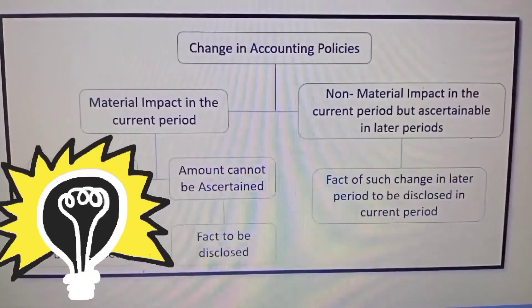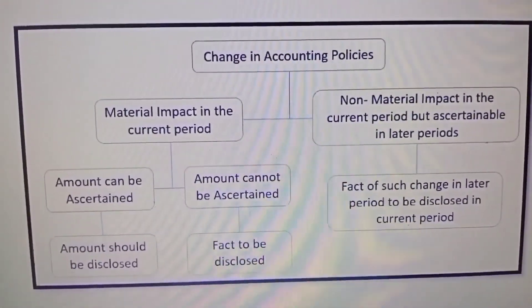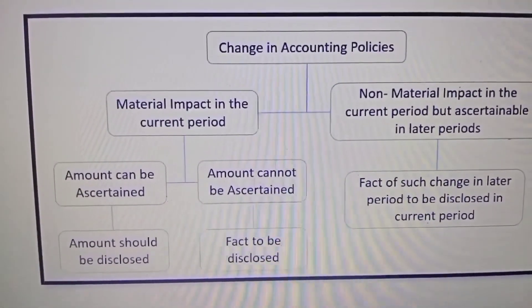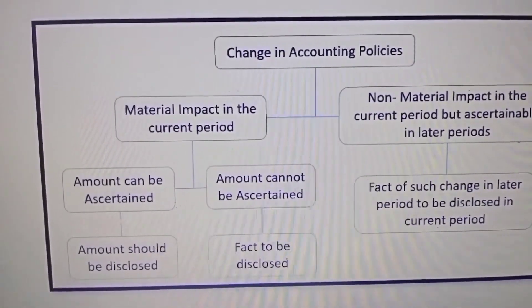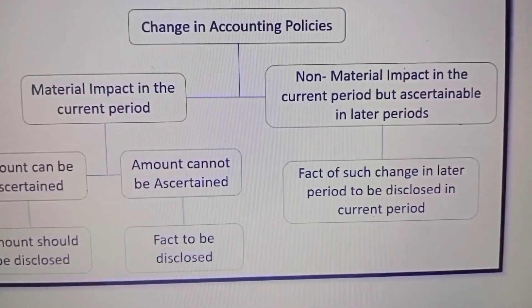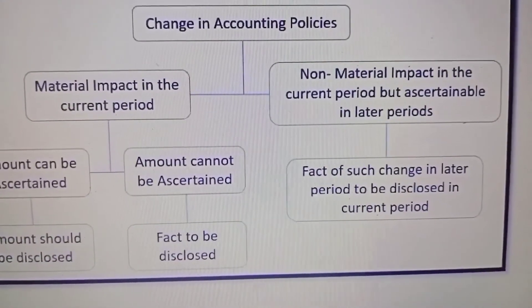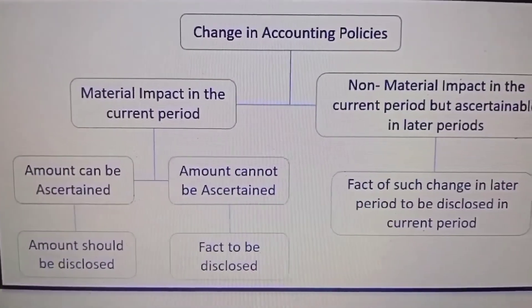Let's discuss the disclosure of change in accounting policies. If there is material impact in the current period, there are two parts: if the amount can be ascertained, then the amount should be disclosed; if it cannot be ascertained, then the fact should be disclosed. In terms of non-material impact in the current period but ascertainable in the next periods, the fact of such change in a later period is to be disclosed in the current period.